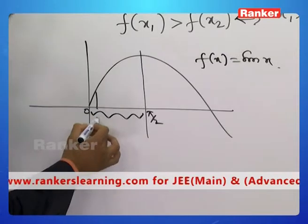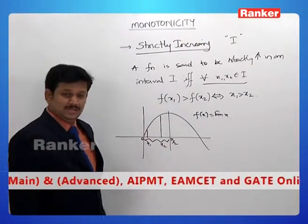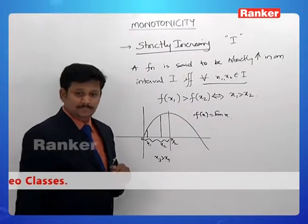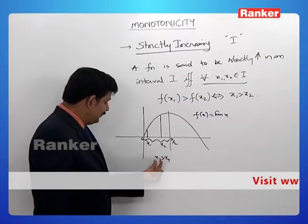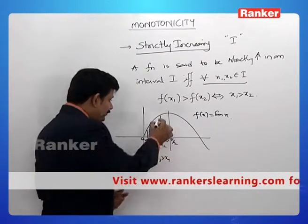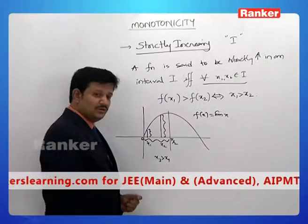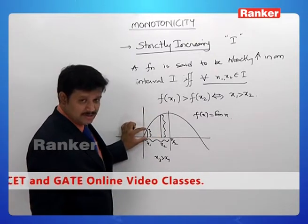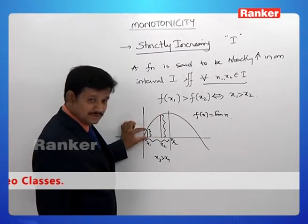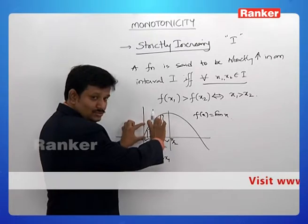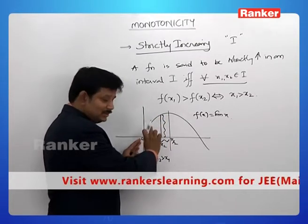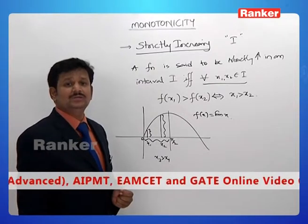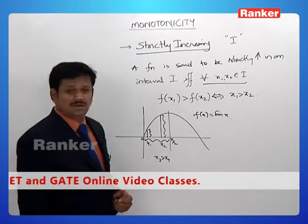Take any two abscissae x1 and x2. We can see x2 is to the right of x1, so x2 is greater than x1. Now, if this is to be a strictly increasing function, then f(x2) has to be greater than f(x1). f(x2) is the y-coordinate of this point and f(x1) is the y-coordinate of this point, and you can observe from the graph that the y-coordinate at x2 is much greater than the y-coordinate at x1. So f(x2) is greater than f(x1). Likewise, you take any combination of x1 and x2 — x2 greater than x1 implies f(x2) will always be greater than f(x1). Such functions are called strictly increasing functions.